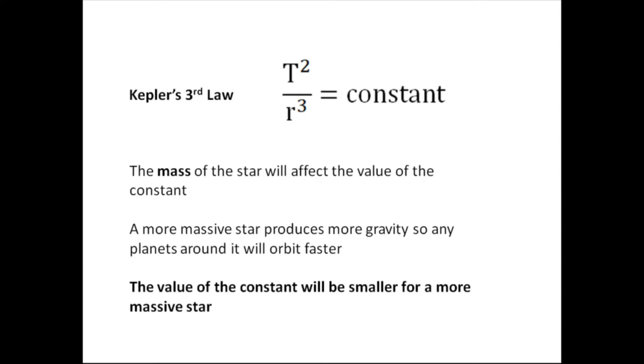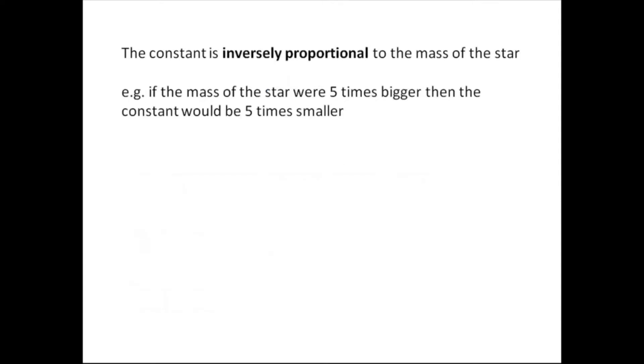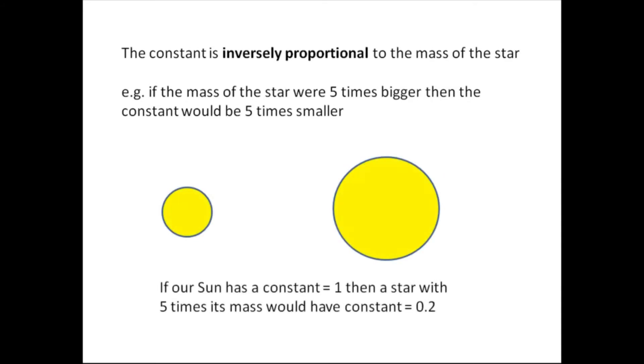So, the value of the constant will be smaller for a more massive star. Now, this is, I think, one of the trickier things, unless you're very good at maths. The constant is inversely proportional to the mass of the star. And that basically means, if the mass of the star, for example, were five times bigger, then the constant would be five times smaller. Now, for example, if our sun had a constant of one, then the star which had five times the mass of our sun would have a constant of 0.2, which is one divided by five.